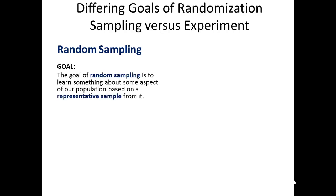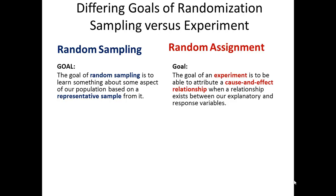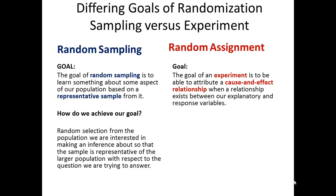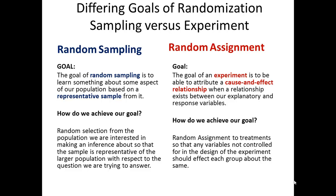Let's talk about the differing goals of randomization in random sampling versus an experiment. In random sampling, the goal is to learn something about some aspect of our population based on a representative sample. In random assignment, the goal of an experiment is to attribute a cause and effect relationship when one actually exists between the explanatory and response variables. We achieve random sampling by random selection from the population; we achieve the experimental goal by random assignment to treatments so that uncontrolled variables affect each group about the same.